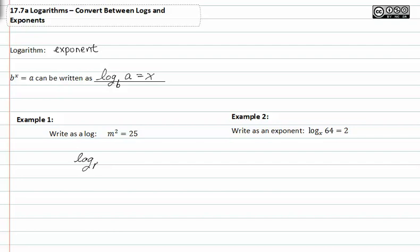The m will now be in the base of the log. We also see that the exponent is what it equals, so this exponent is going to be right here. And since a is right after the log, the 25 will be right after the log.